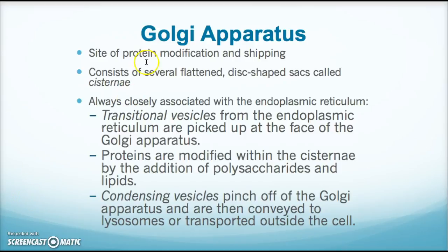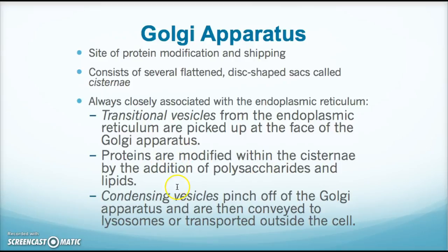The Golgi apparatus is another organelle that modifies proteins and gets them ready to ship out either into the cell or outside of the cell. It has flattened disc-shaped sacs called cisternae — they often look like pancakes. It's closely associated with the endoplasmic reticulum, taking proteins made on the rough ER and modifying them by adding sugars or lipids. These modified proteins are then pinched off in condensing vesicles and transported to a lysosome or outside the cell.